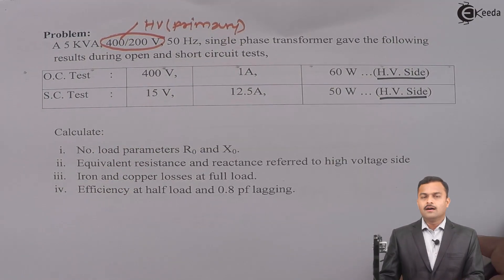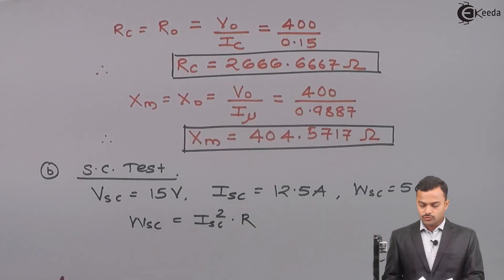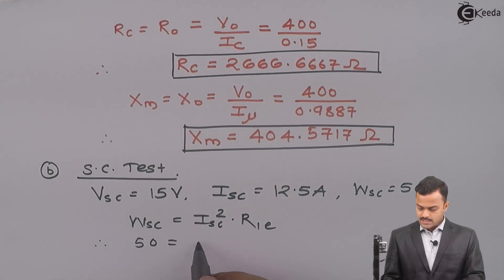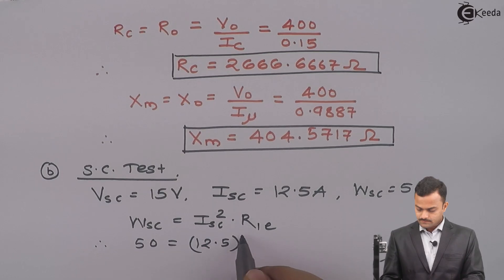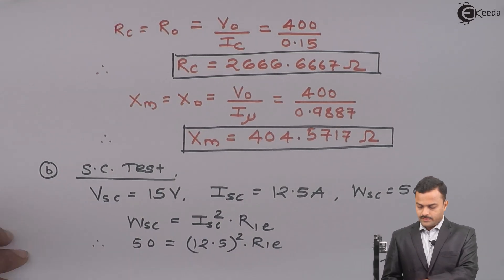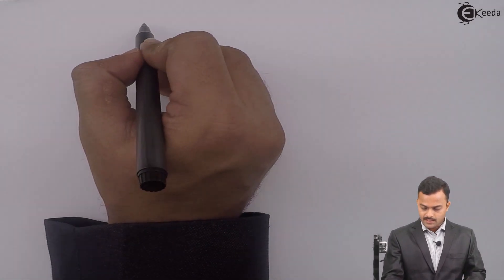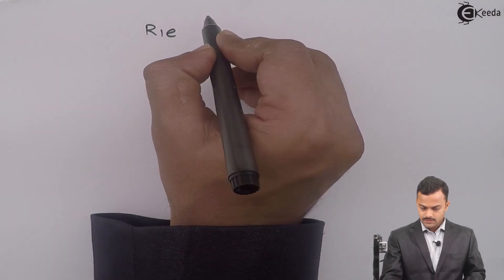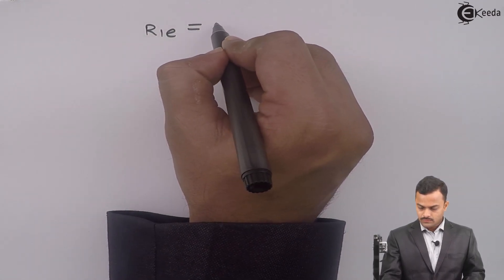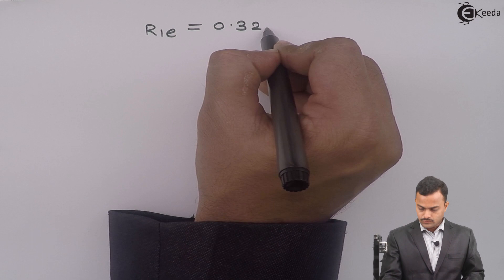So, I have to take a resistance referred to primary. So, that will be equal to R1E. So, WSC is 50, ISC is 12.5. So, solving this I will get R1E equal to 0.32 ohm.